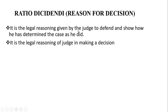Ratio Decidendi is the legal reasoning given by the judge to defend and show how he has determined the case as he did. This is the legal reasoning of the judge where he explains the way he made a certain decision based on the evidence presented in the court of law. For example, in a criminal case, the evidence presented by the prosecution or the accused, and how it resulted in making a certain decision.